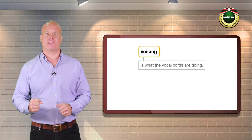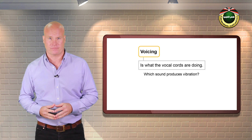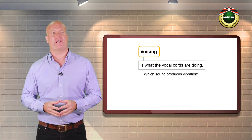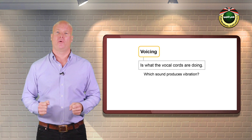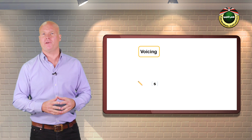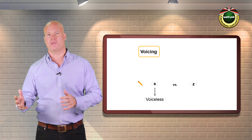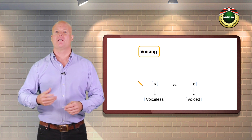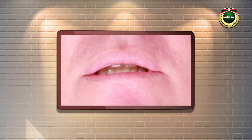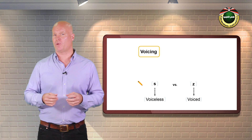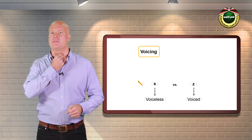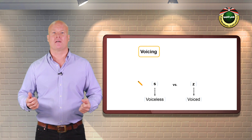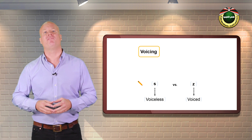Voicing, or the state of the glottis, refers to what the vocal cords are doing. When air passes through open vocal cords, we call these voiceless sounds. When air passes through vibrating vocal cords, we call these voiced sounds. You can feel the difference by putting your hand on your Adam's apple. Then produce the sounds ssss, zzz. You should feel that zzz produces the vibration, and so it is a voiced sound, whereas ssss does not produce vibration, so it is a voiceless sound.